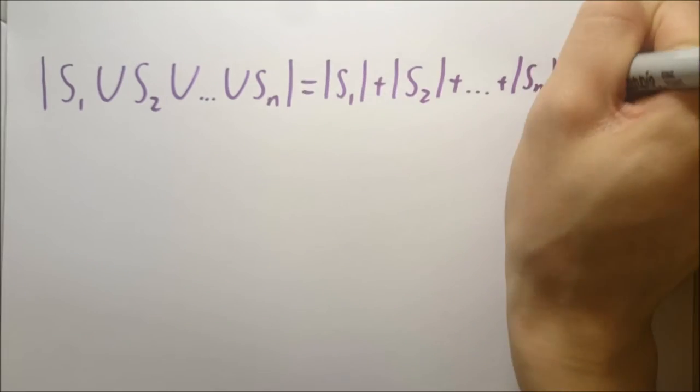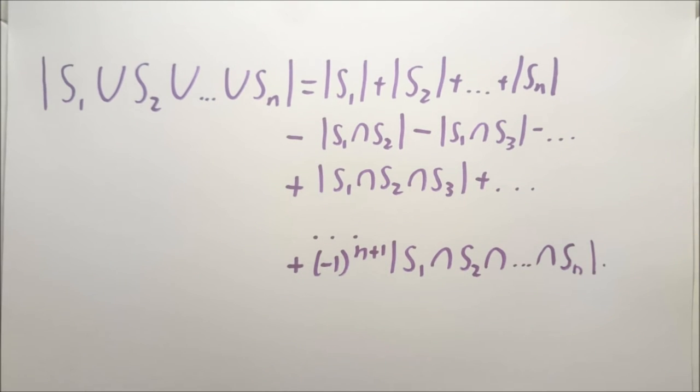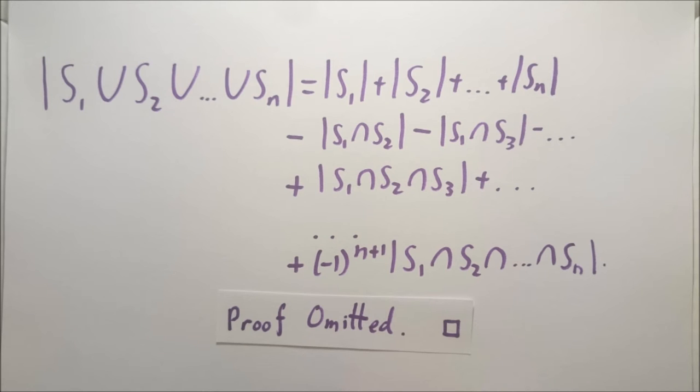For the general case you can probably spot a pattern. This is given by the formula: the size of the union of the sets S1 up to Sn equals the sum of the size of the individual sets minus the size of all the double intersections plus the size of all the triple intersections all the way up to minus one to the power of n plus one times the size of the intersection of all the sets. We will omit this proof but you can prove it by induction if you're into that kind of thing.